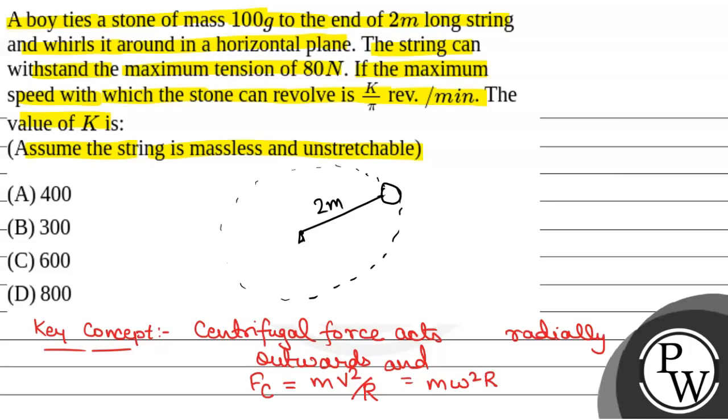then the centrifugal force will act radially outward, that is m omega squared r. And the tension in the string will be radially inward, that is T.